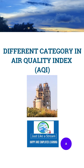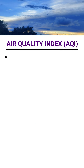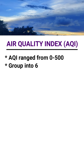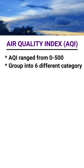Let us quickly learn what are the different categories or classes prescribed under the Air Quality Index in India. The calculated AQI value will range from 0 to 500, and these values are grouped into 6 different categories.